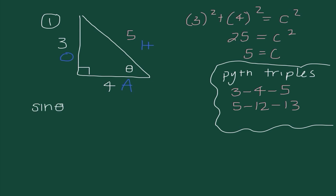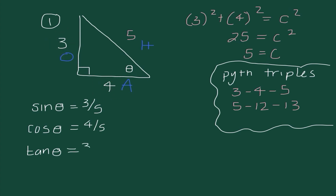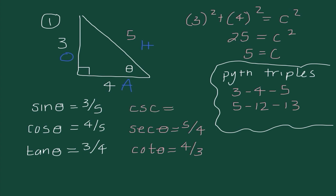Now I know I need to find all six trigonometric ratios. Starting with sine, cosine, and tangent: sine is opposite over hypotenuse, so that's 3 over 5. Cosine is adjacent over hypotenuse, so that's 4 over 5. Tangent is opposite over adjacent, which is 3 over 4. From here, the reciprocal functions: cotangent is 4/3 (the reciprocal of 3/4); secant is the reciprocal of 4/5, which is 5/4; and cosecant is the reciprocal of 3/5, which is 5/3. These six values are our answer.